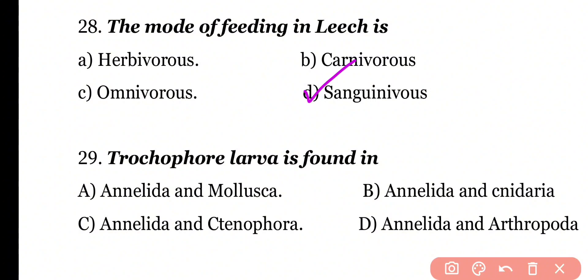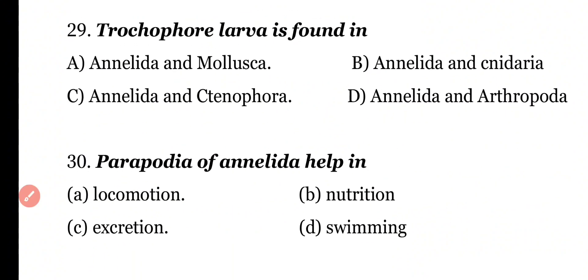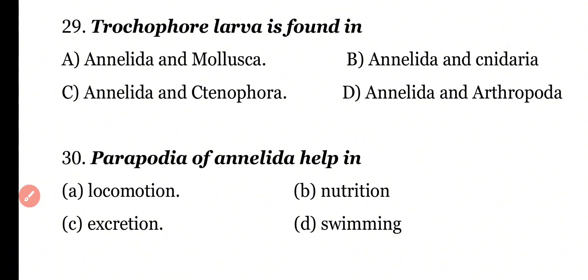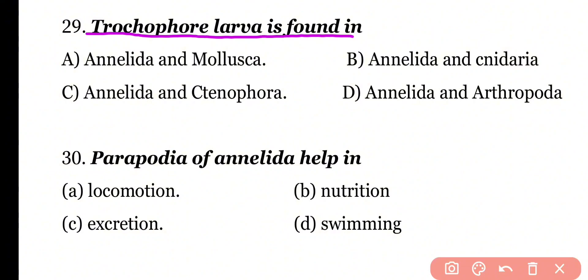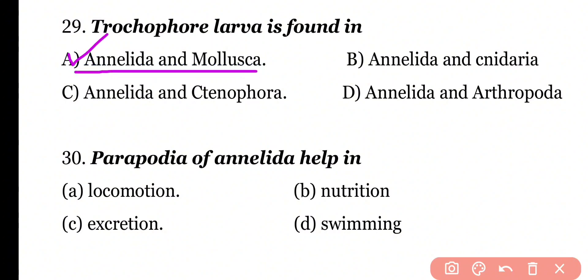Question number 29. Trochophora larvae is found in: Annelida and Mollusca, Annelida and Cnidaria, Annelida and Ctenophora, or Annelida and Arthropoda. Correct answer is option A. Trochophora larvae is present in both Annelida and Mollusca.